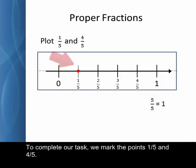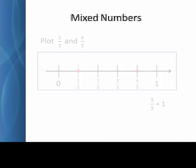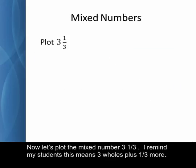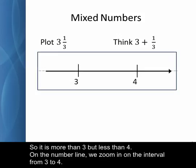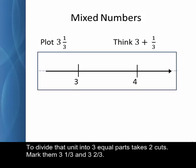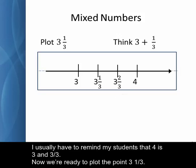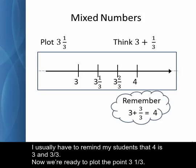To complete our task, we mark the points one-fifth and four-fifths. Now let's plot the mixed number three and a third. I remind my students that this means three wholes plus one-third more. So it's more than three, but less than four. On the number line, we zoom in on the interval from three to four. To divide that unit into three equal parts, it takes two cuts. Mark them three and a third and three and two-thirds. I usually have to remind my students that four is three and three-thirds. Now we're ready to plot the point three and one-third.